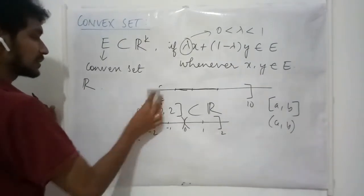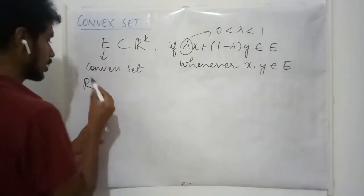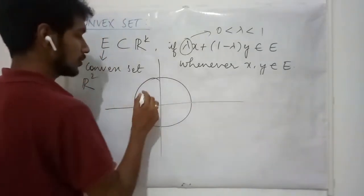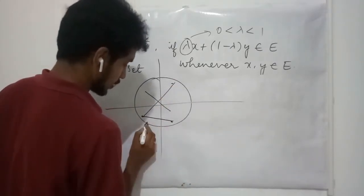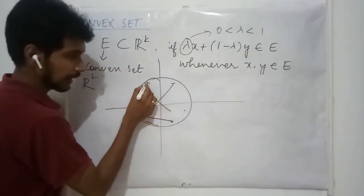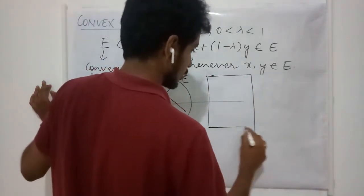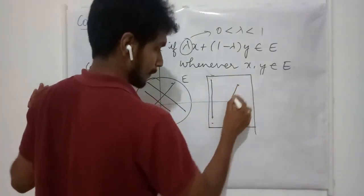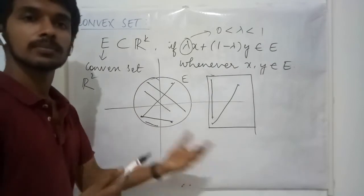Can you extend this idea to R2? On R2, any circle is going to be a convex set. Whatever points you take, you can always draw a line joining these two points, and those points lie entirely inside E. Even if you take a rectangle, the same thing happens. So on R2, circles and rectangles turn out to be convex sets.